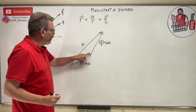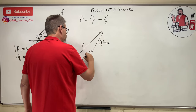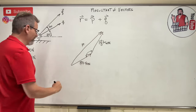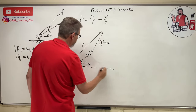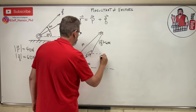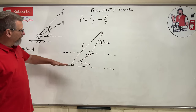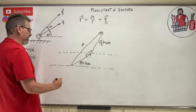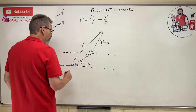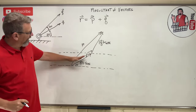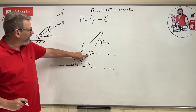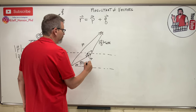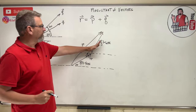We know a side and a side — if only we knew that angle. Lines are free so we can draw all we want. Let's draw one across there and one across here. From horizontal up to vector P, that's 25 degrees. Two parallel lines and a line between them — if that's 25, then that is 25, and this little angle right here is 25 degrees.